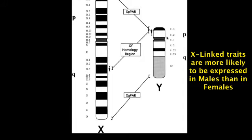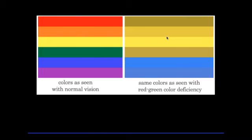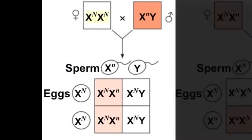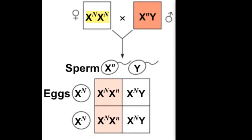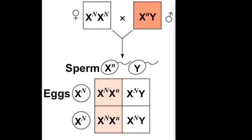X-linked recessive disorders are much more likely to be expressed in males than in females. Red-green color blindness means that an afflicted person can't distinguish between red and green color. Another common type is blue-green color blindness. The inheritance can be demonstrated using notation where capital N represents normal color sightedness and lowercase n is the mutated allele for color blindness. An afflicted male needs only one mutated allele to have the disorder, while a female must have two mutated recessive alleles.